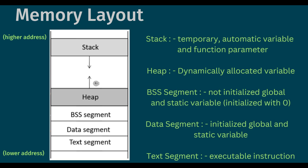We need to understand which variable will be allocated in which region. In the Stack, temporary, automatic variables and function parameters will be stored. Whatever we declare in a function — the local variables and whatever parameters we pass to the function — will be stored on the stack. For the Heap, all dynamically allocated memory using functions like calloc and malloc will be stored on the heap. All non-initialized global and static variables will be stored in the BSS segment. If a global or static variable is initialized with some value, then it will be stored on the data segment. Non-initialized global and static variables in BSS will be initialized with zero. In the text segment, it stores the executable instructions. Let's understand with an example which variable will be allocated in which region.